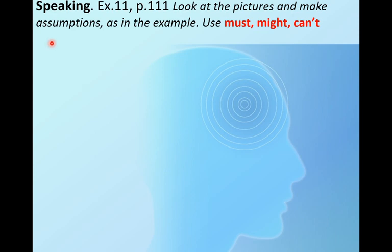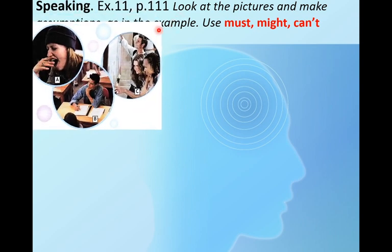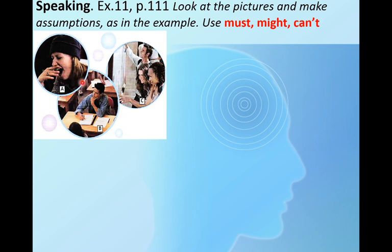Next: let's practice speaking. Open your books on page 111, exercise eleven. Let's look at the pictures and make assumptions as in the example. We also have to use all three forms of modal verbs: must, might, and can't. Let's try to describe each picture using all three.